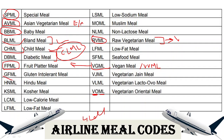GFML is the Gluten-Free Meal, for people who are intolerant to gluten. In this meal, no wheat, barley, rye, or any derivatives of these grains are served. If you are on a gluten-free diet, you should request GFML.